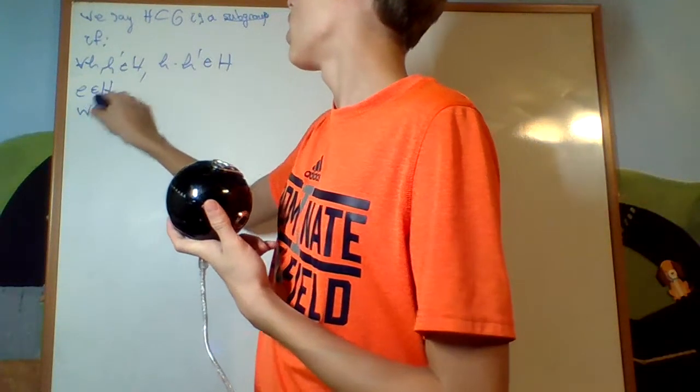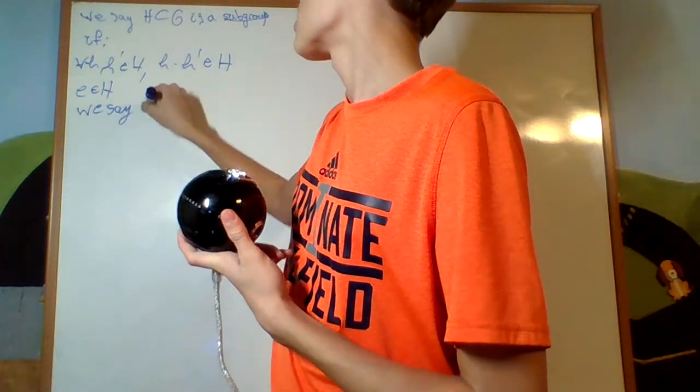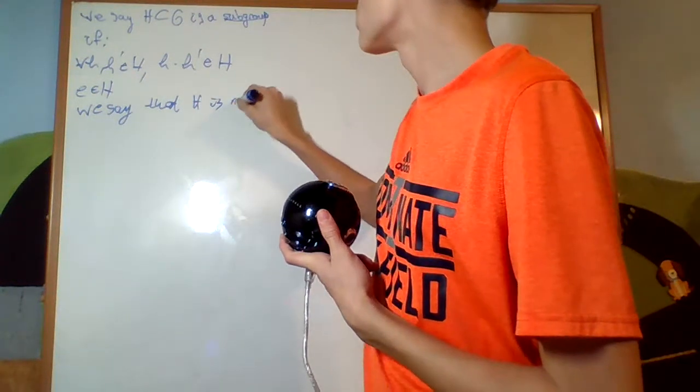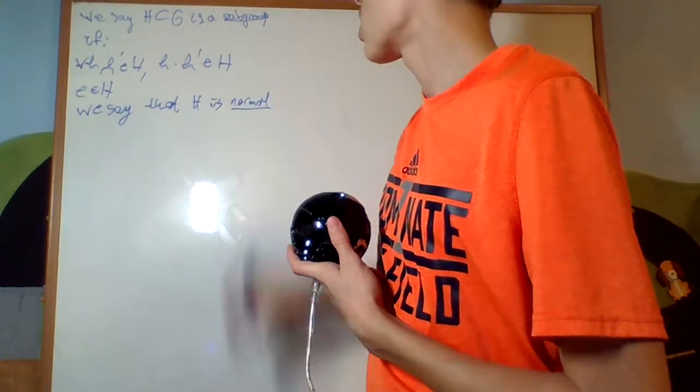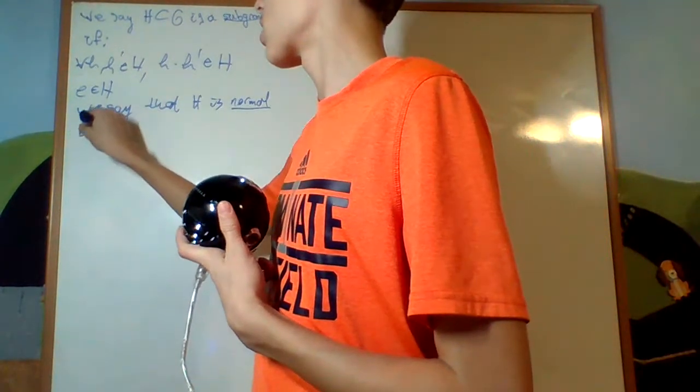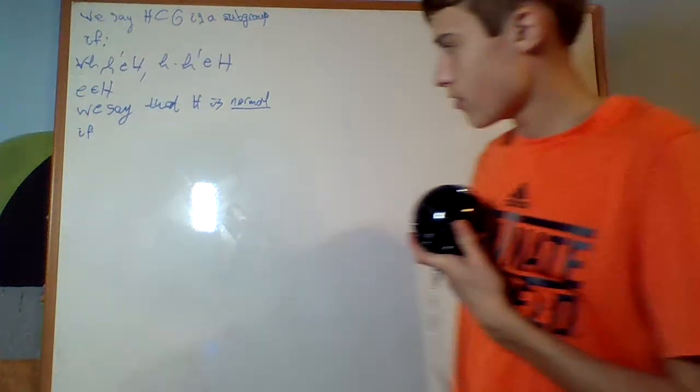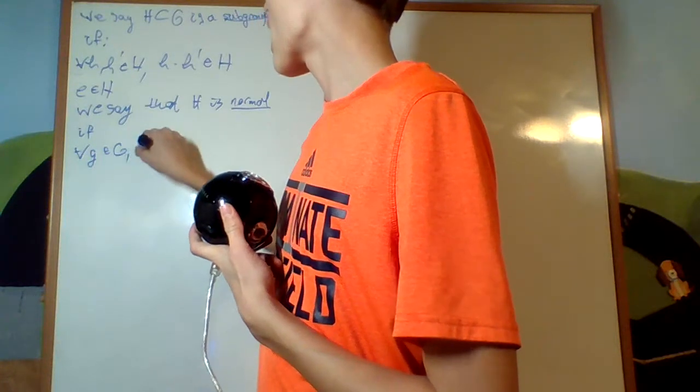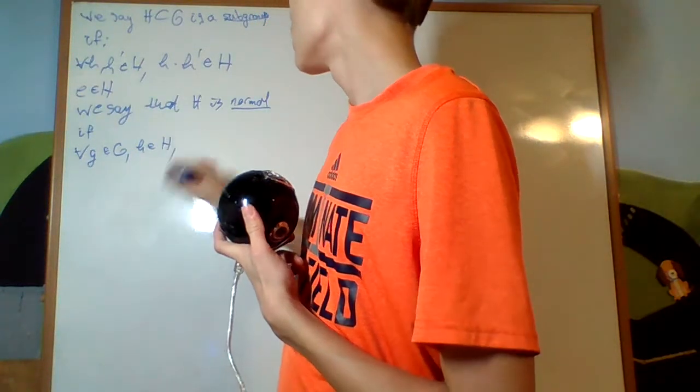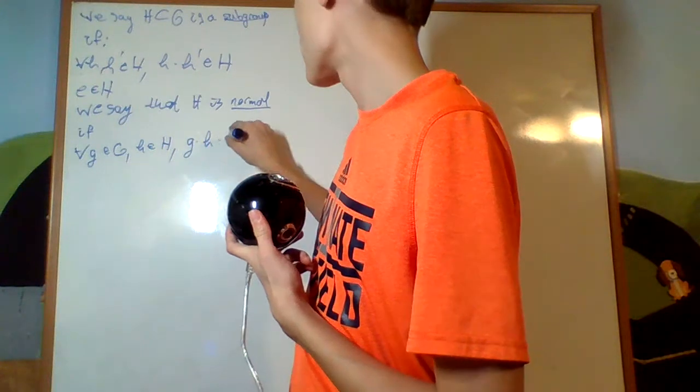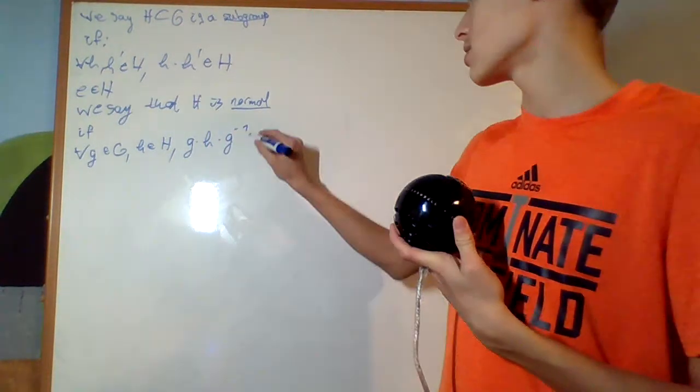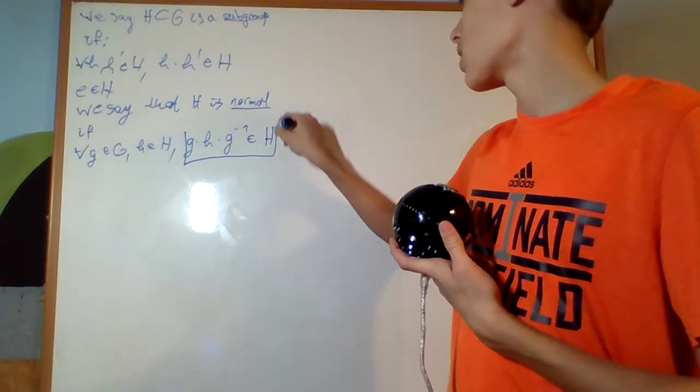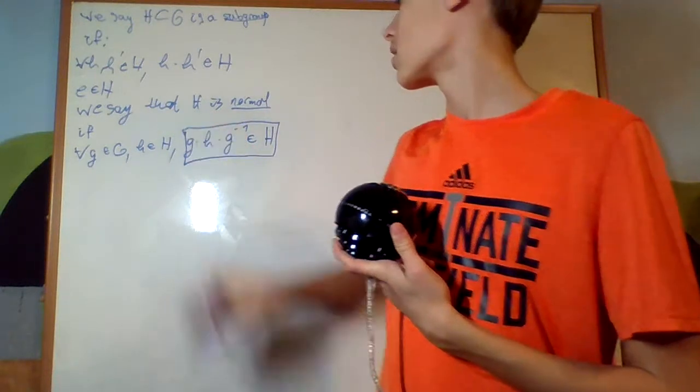We say that H is normal if, for all G an element of G, H an element of H, G times H times G inverse is also an element of H. It's closed under conjugation everywhere.